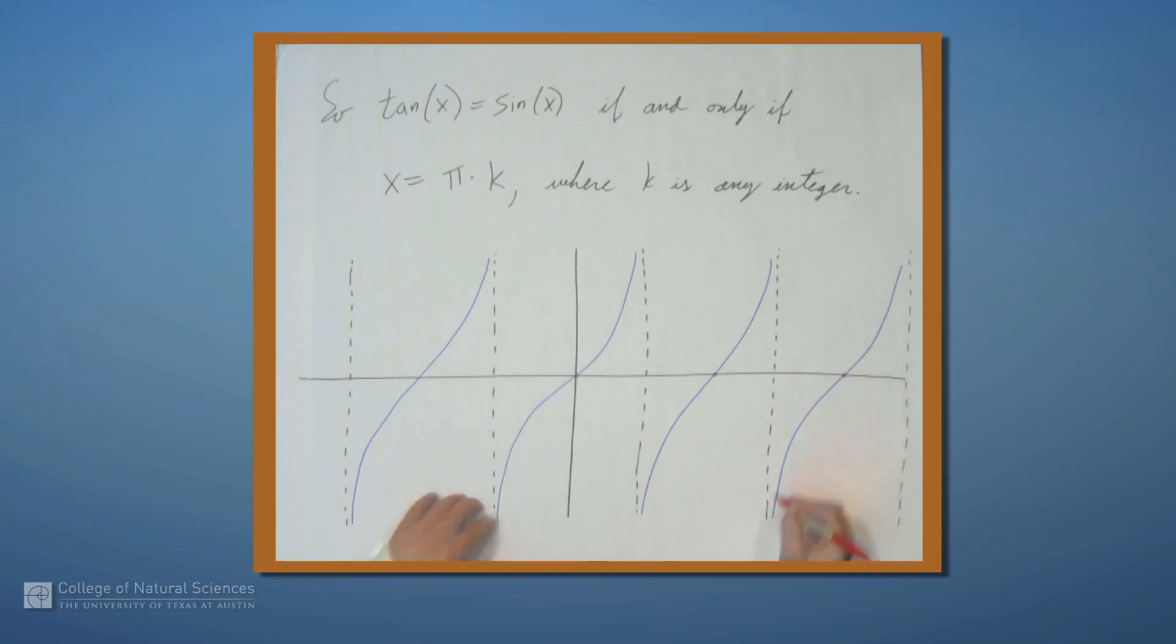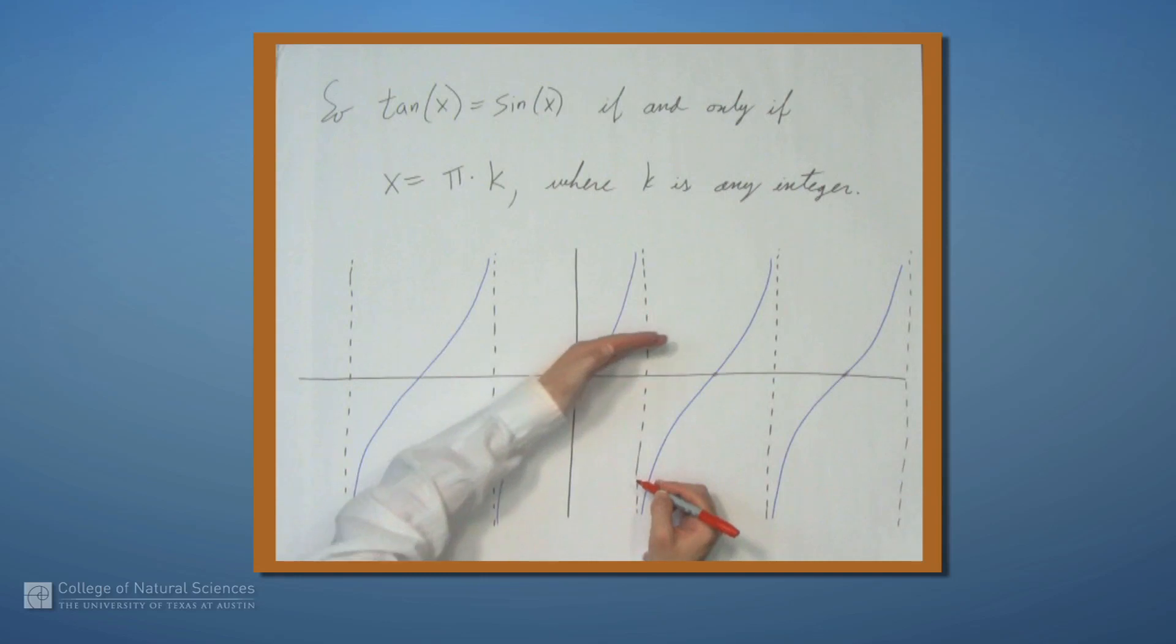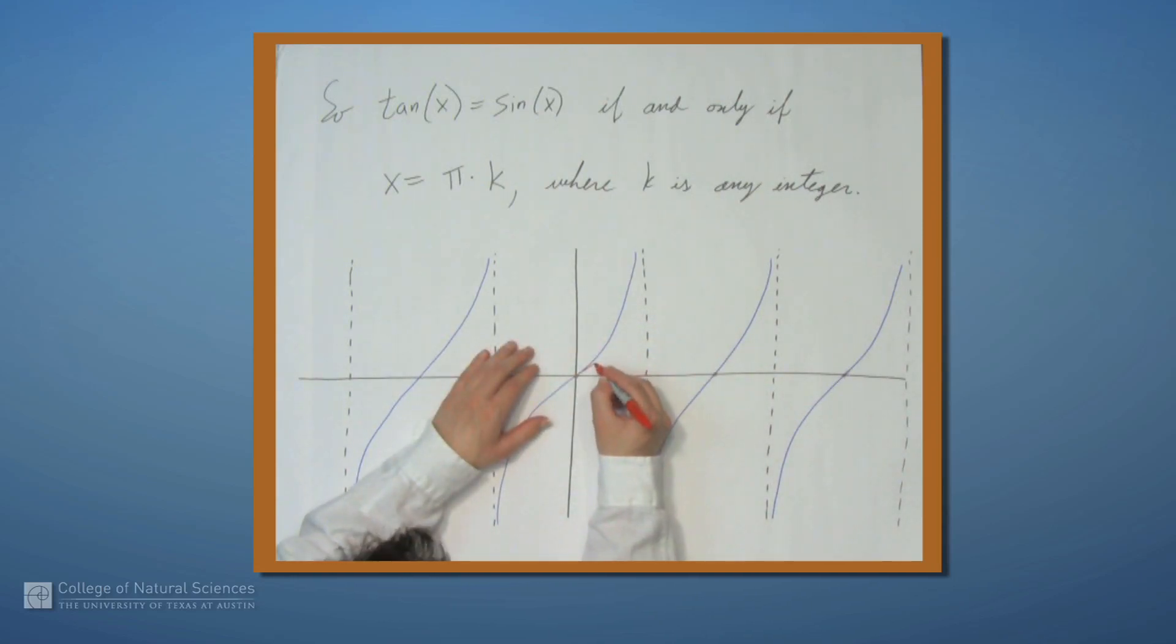And then it hits 0 again here after it comes up like this. But the key is that we don't have behavior, say like this, where sine comes up and then intersects tangent again. So what's really happening is sine is just touching tangent and then immediately going in this direction.